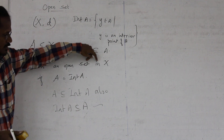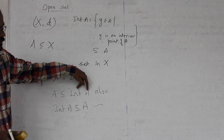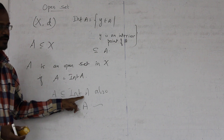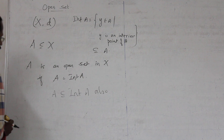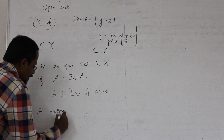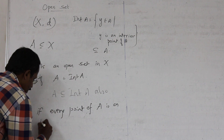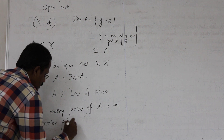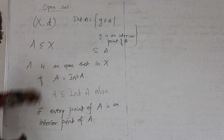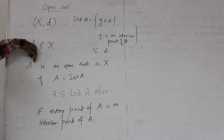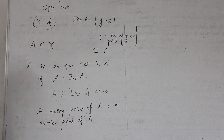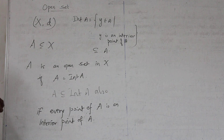Therefore, to say A is an open set in X, it is enough to say that A ⊆ interior(A), which means every point of A is an interior point of A. So we rephrase: A is an open set if every point of A is an interior point of A.